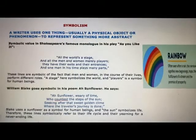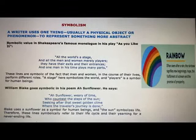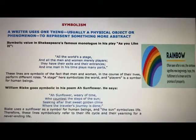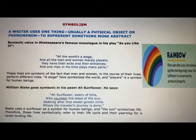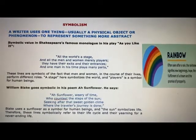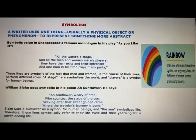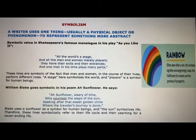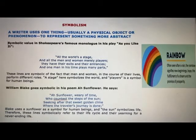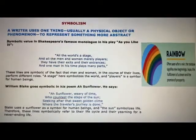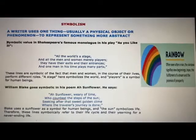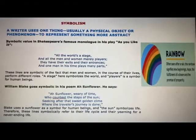The next poetic device is symbolism. Here, a writer uses one thing — usually a physical object or phenomenon — to represent something more abstract. For example, when Shakespeare says these lines, they are symbolic of the fact that men and women in the course of their lives perform different roles. A stage here symbolizes the world, and players symbolize human beings. In symbolism, a writer uses one thing, usually a physical object or phenomenon, to represent something more abstract.